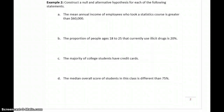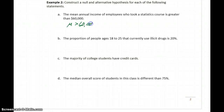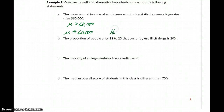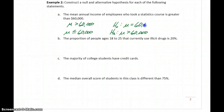Let's look at a few examples. For part A, the mean annual income of employees who took a stats course is greater than $60,000. So our claim is that mu is greater than 60,000. The negation of that would be that the mean is 60,000 or less. The statement with the strict inequality becomes the alternative: mu is greater than 60,000. The null hypothesis is that mu equals 60,000. In this case, the claim ended up becoming the alternative hypothesis.